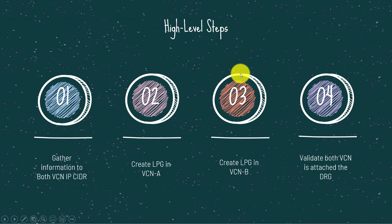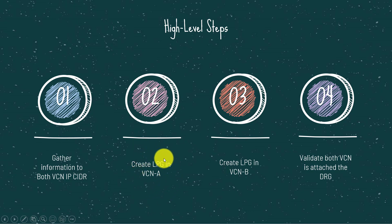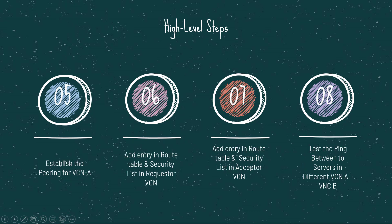These are the high-level steps I am going to discuss before the demo. First, we gather the CIDR information between the two VCNs that need to be connected. We create a Local Peering Gateway in VCN A, and we create a Local Peering Gateway in VCN B. We validate that both VCNs are attached to the DRG. Next, we establish the peering connection from VCN A. Then we add the route table entry and security list in the requestor VCN, and similarly add the route entry in the acceptor VCN. Finally, once the peering is done, we test the ping between servers residing in both VCNs.